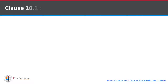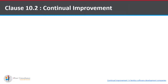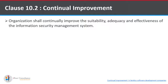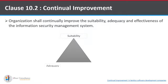Now let's look at Clause 10.2 — continual improvement. Continual improvement means continuously monitoring previous corrective actions implemented and suggesting further improvements. Every organization shall continually improve the suitability, adequacy, and effectiveness of the Information Security Management System. This is based on a triangle of suitability, adequacy, and effectiveness of every corrective action implemented.